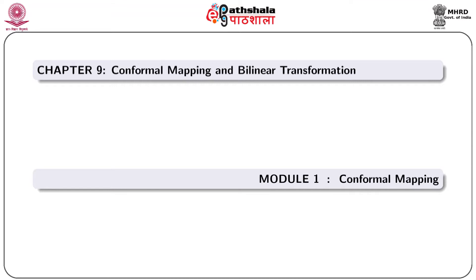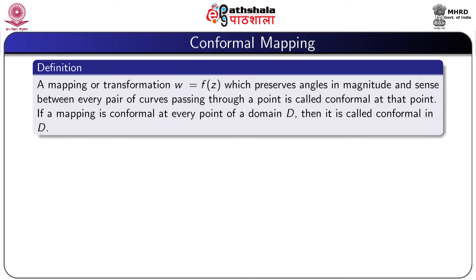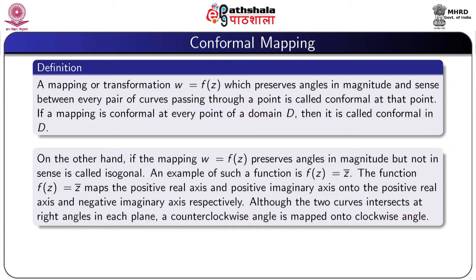A mapping or transformation w = f(z) which preserves angles in magnitude and sense between every pair of curves passing through a point is called conformal at that point. If a mapping is conformal at every point of a domain D, then it is called conformal in D. On the other hand, if the mapping w = f(z) preserves angles in magnitude but not in sense, it is called an isogonal mapping.